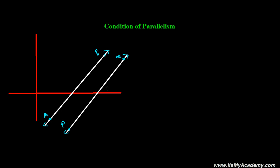Line PQ is making angle alpha with the positive x-axis, and line AB is making angle beta. Now if both lines are parallel, they should never meet each other. They will never meet if angle alpha equals angle beta. If both lines make the same angle with the positive x-axis, they will go on forever and never meet — they are parallel.